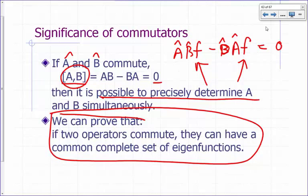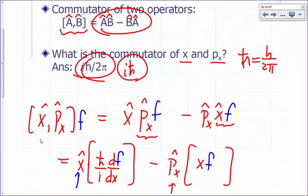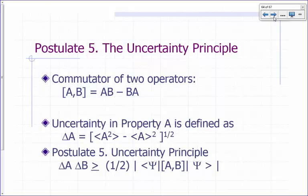Since x and px do not commute, we say it's not possible to simultaneously determine x and px precisely — which is our uncertainty principle. So that leads us to postulate five, which we're going to cover next time. We're going to talk about the uncertainty principle expressed in terms of commutators.